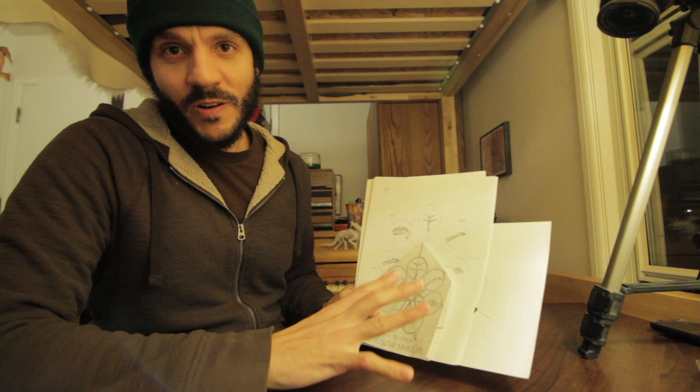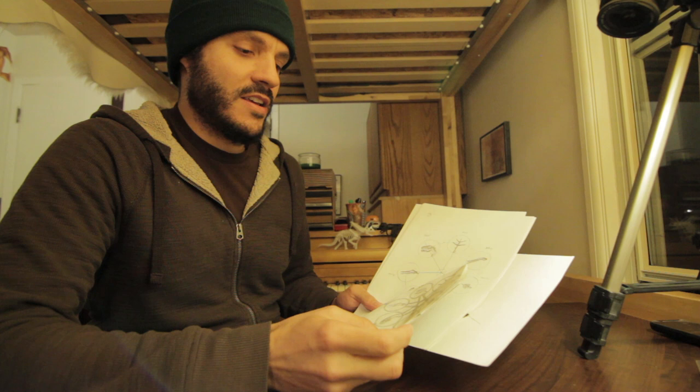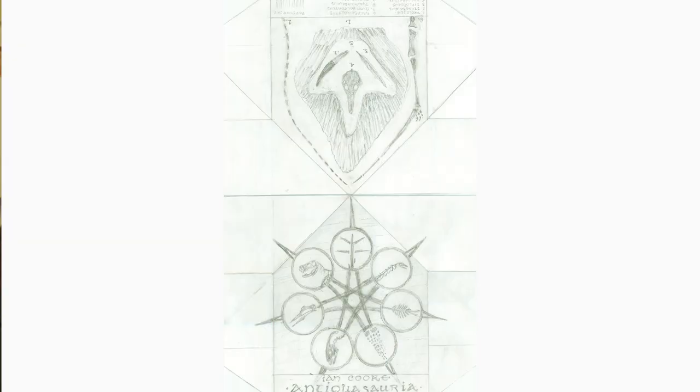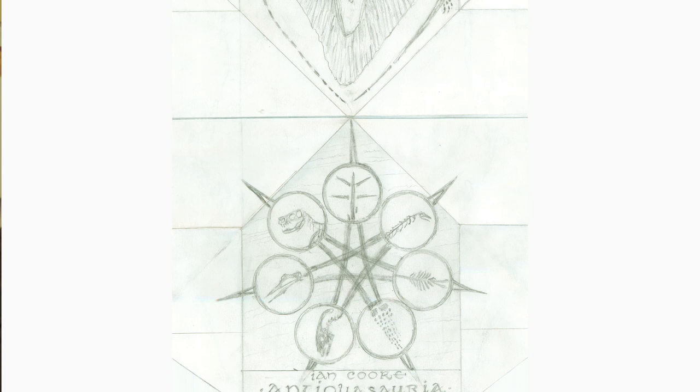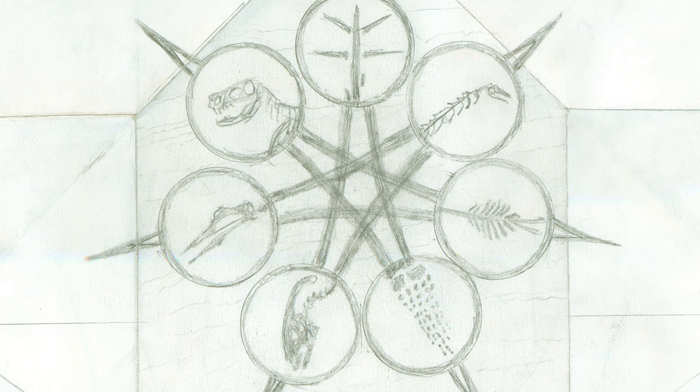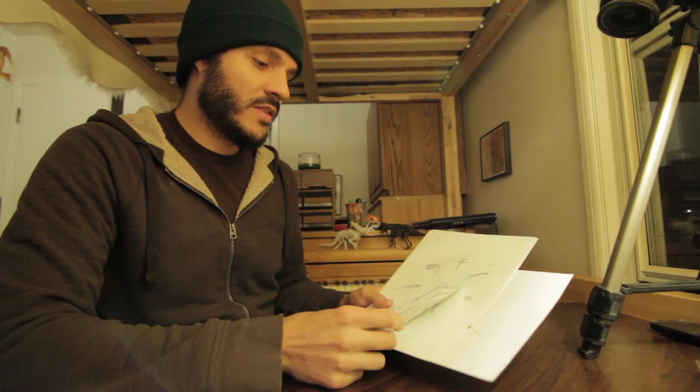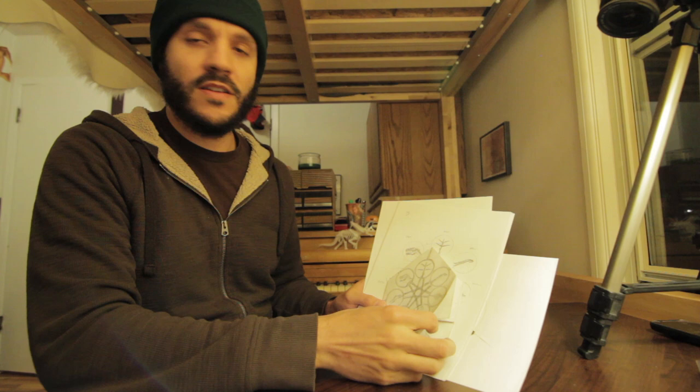Hi, I've got my Antiquasoria album artwork preliminary sketch stuff here. There ended up being seven prehistoric animals in the album, so I decided to have seven icons, one for each animal, and put them in a circle which fits over a seven-pointed star.